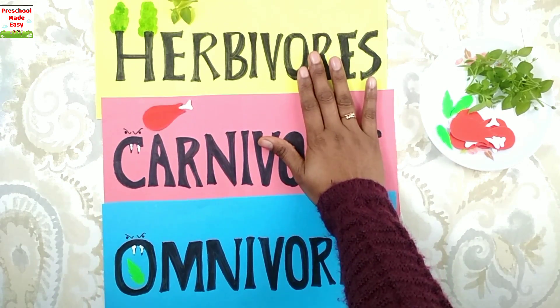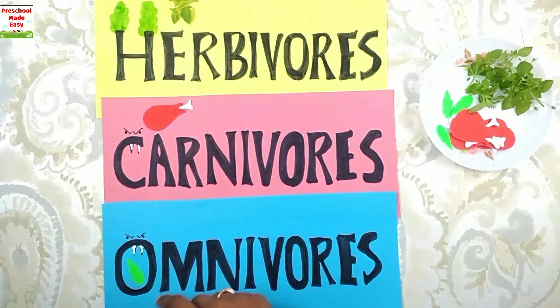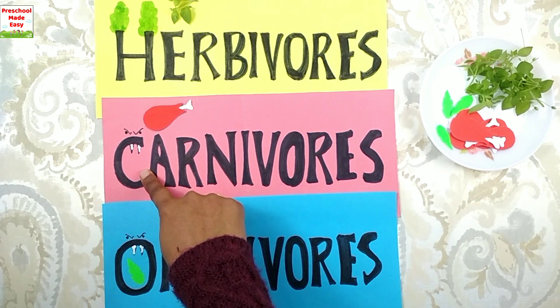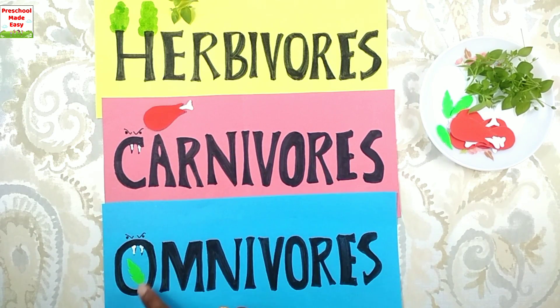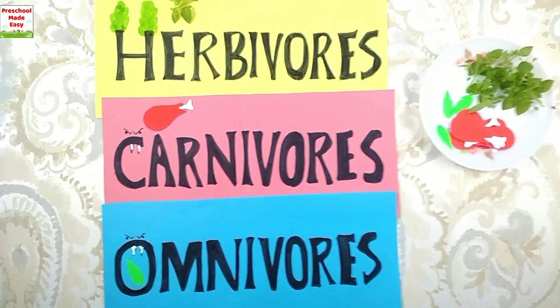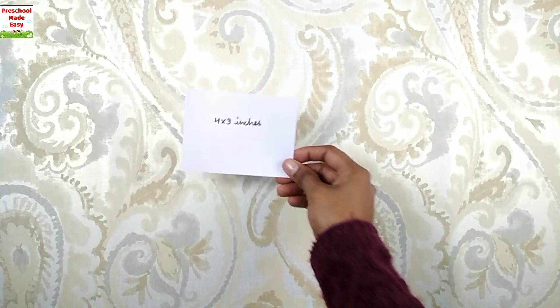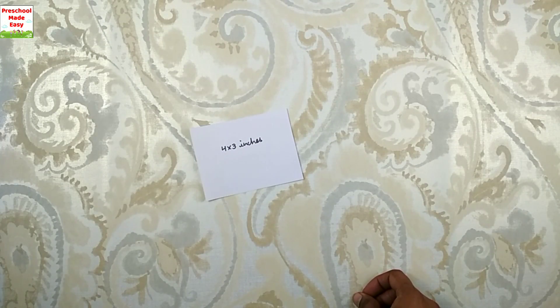Now this is very clear — no confusion at all. Herbivores eat only plants because H has trees. Carnivores have sharp teeth so they eat only flesh. Omnivores have sharp teeth as well as a big stomach, so they eat both plants and animals. Now prepare some animal cutouts for the activity.